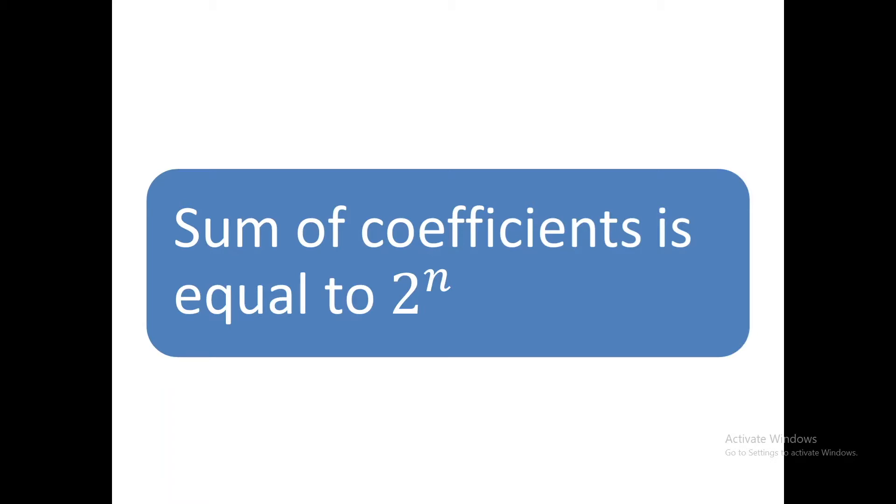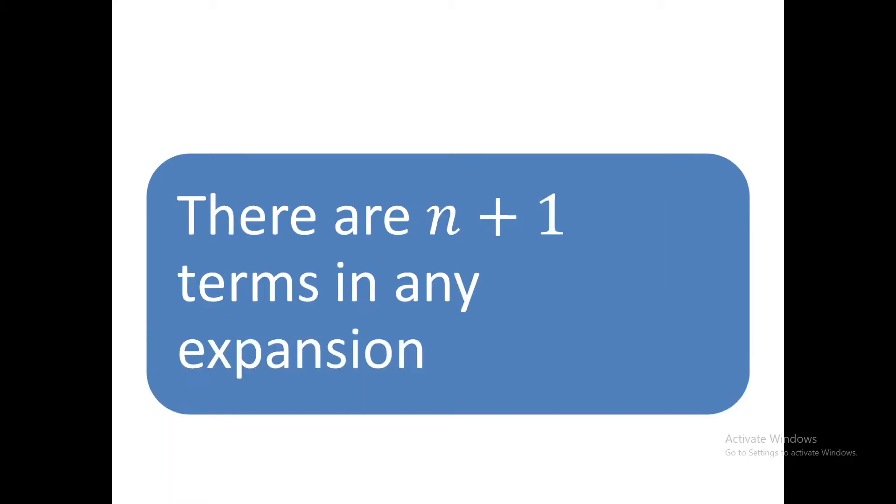On the left hand side you get 2 power n, and on the right side you get the same answer. If you take n equals 2, on the left hand side you have 4, and on the right hand side if you add all the coefficients you also get 4. So you can verify for any exponent.